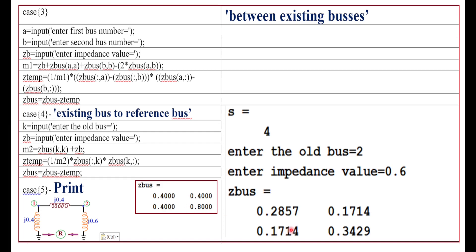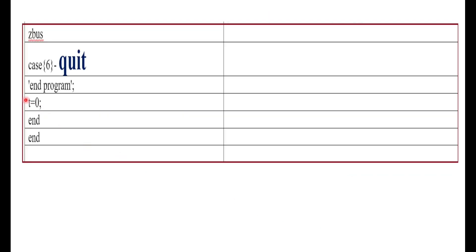This is the final ZBUS matrix calculated from MATLAB. Then case number 5 prints the ZBUS value, and case number 6 quits the program. After finishing, we end the switch and end the while loop.